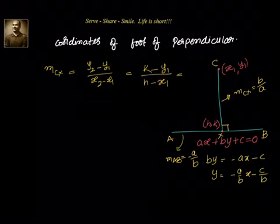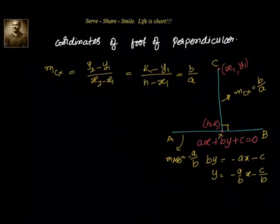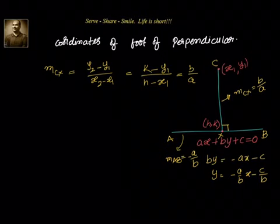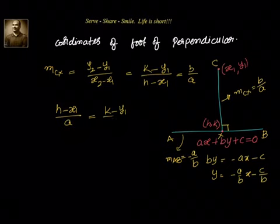Taking this ratio, we can switch numerator and denominator using the alternando property, and write it as: (h - x1)/a = (k - y1)/b. From this we can solve using two methods.